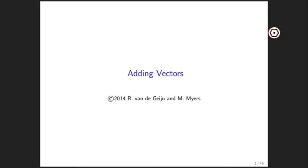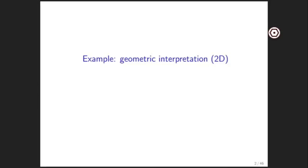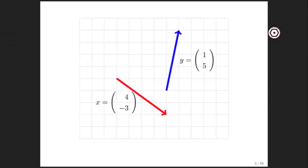In this video, we review vector addition in more detail than we did before. Let's first look at what this means geometrically. Let's say that we have two vectors x and y. Recall that vectors have a direction and a length, but you can move them around.